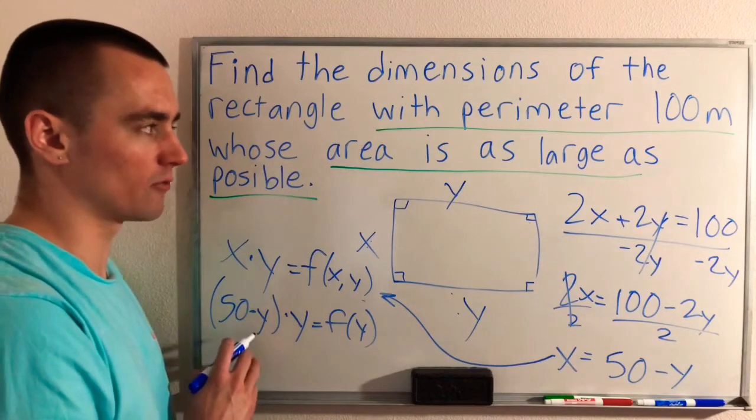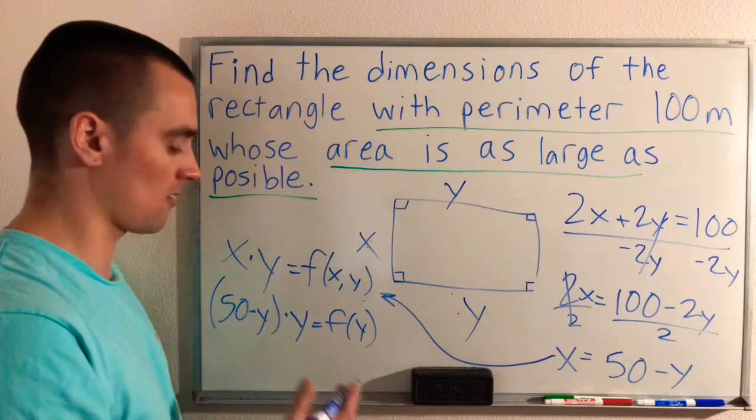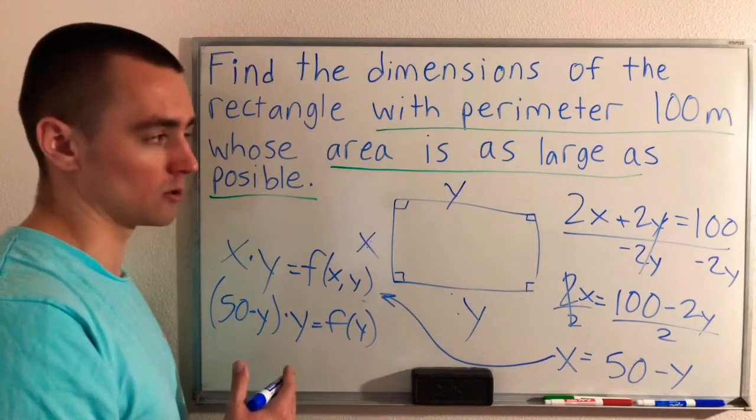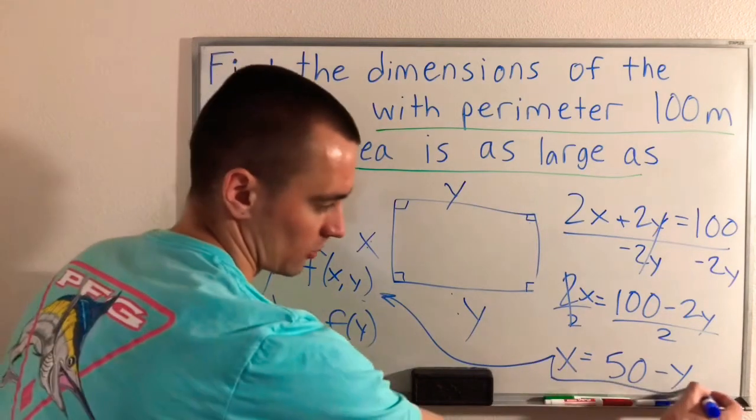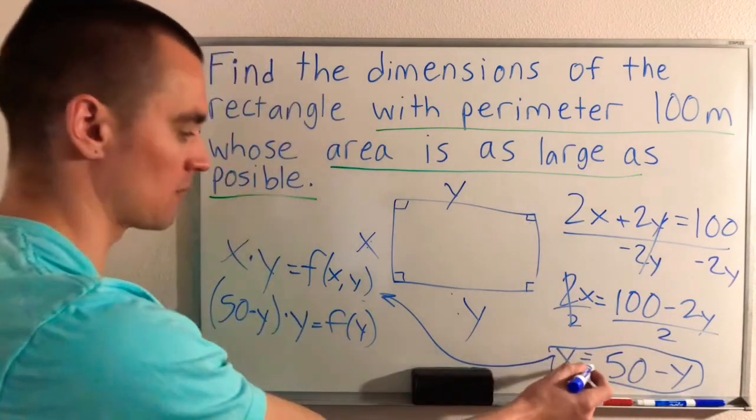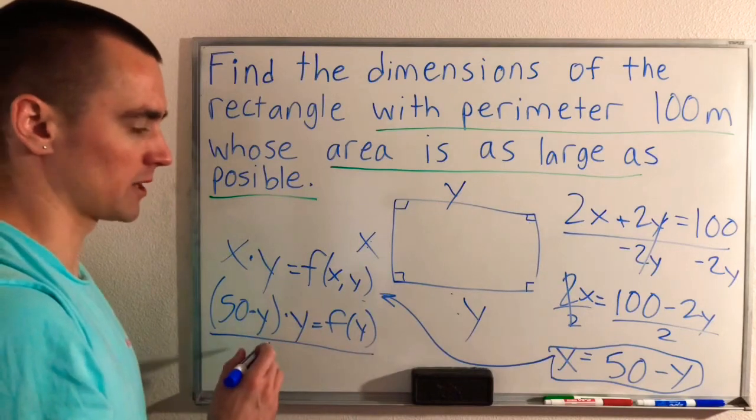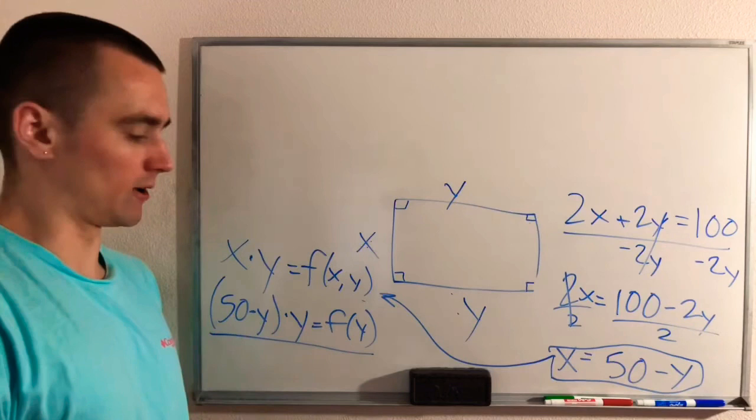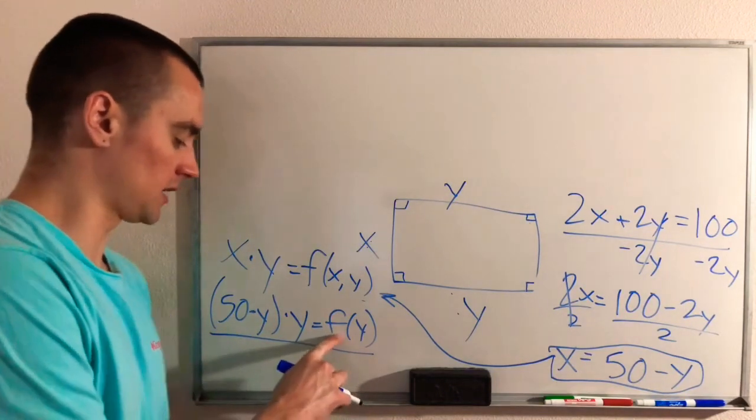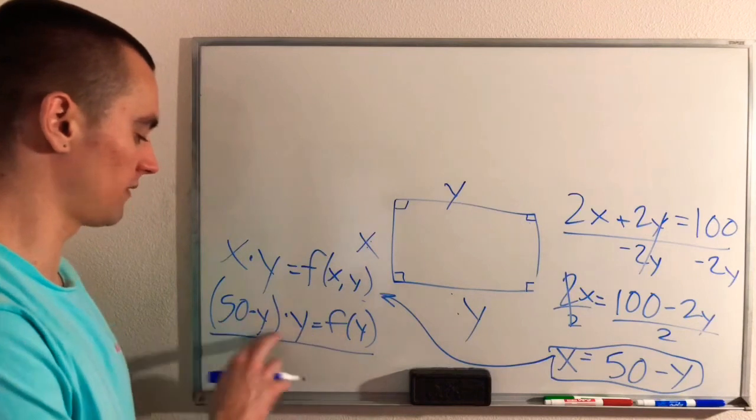So now we have a single variable function that we're trying to make as large as possible. Or in other words, we just need to figure out where this is as large as possible. And then we can take it back to this equation here. So we're going to want to keep this equation. This is going to come into play later. And then this is the function that we're going to maximize. So if you're trying to maximize a function, the first thing you need to do is find its critical numbers, which basically just means take the function's derivative and set it equal to 0.